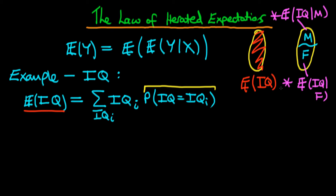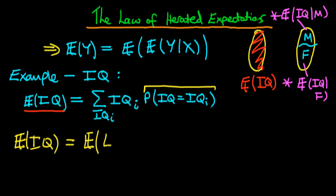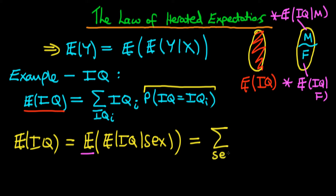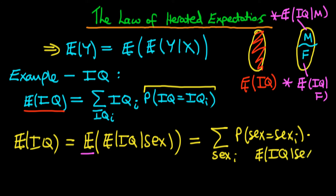Let's go through this to prove that's actually the case. In this example, the expected value of IQ — the unconditional expectation — which we get from the law of iterated expectations, is equal to the expectation of the expected value of IQ given an individual's sex. What does it mean to take an expectation of an expectation? Essentially, we need to sum over all the different values which the variable sex can take on. So we sum over gender, weighting by the probability that an individual's sex equals that particular value, multiplied by the expected value of IQ given that value of sex.